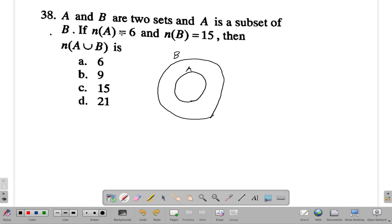The number of elements in A is six, number in B is 15. Then what is A union B? So if you have one, two, three, four, five, six elements in A and you have 15 in B, that means six so far, seven, eight, nine, ten, eleven, twelve, thirteen, fourteen, fifteen in B.